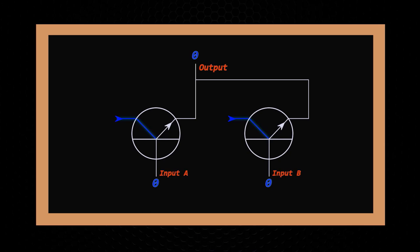If we apply current to the base of the transistor on the left, labeled as input A, then current is able to flow from the collector of that transistor to its emitter and ultimately will power the output. Similarly, if we apply power to the base of the transistor on the right instead, then power would flow from its collector to its emitter and power on the output. Essentially, if we set either input A or input B to one, then the output will be one.